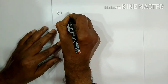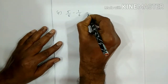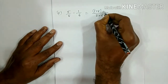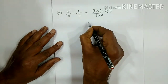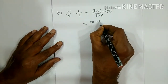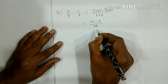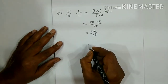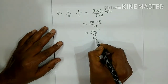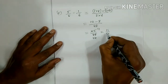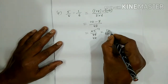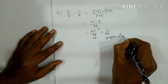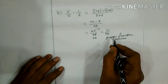Fifth bit: 5 by 8 minus 1 by 6. LCM of 8 and 6 is 48. So 5 into 6 minus 1 into 8 gives 30 minus 8 equals 22 by 48. Simplifying by dividing by 2: 11 by 24. Since the numerator is less than the denominator, this is a proper fraction and cannot be written as a mixed fraction.